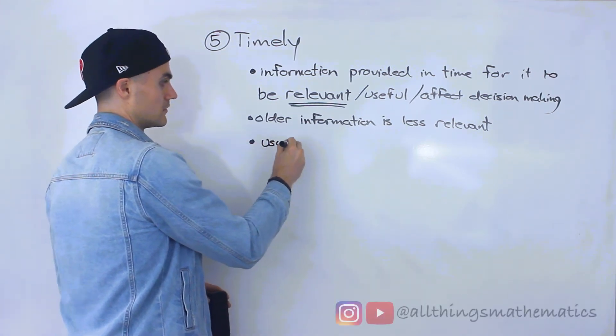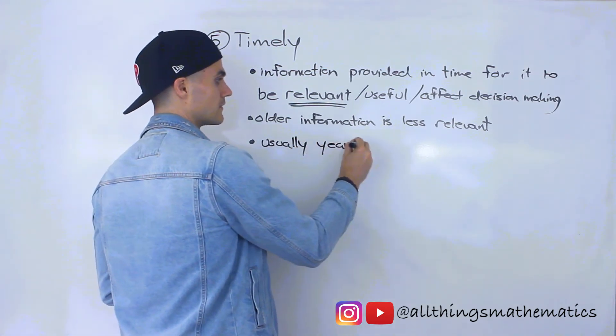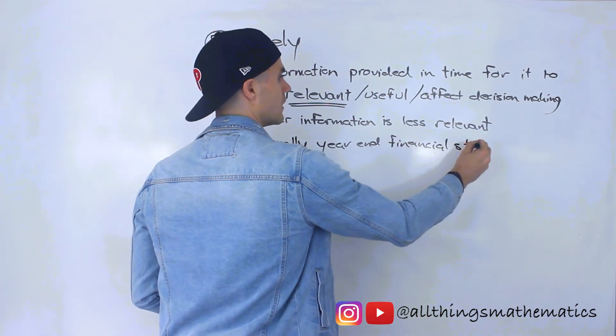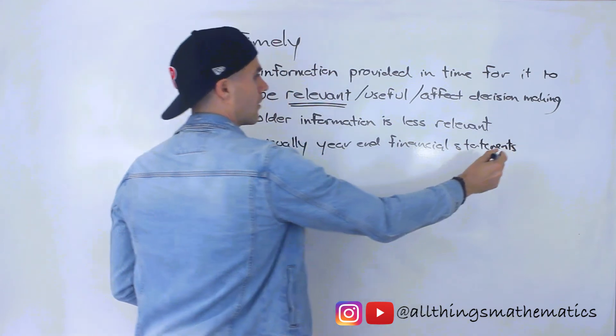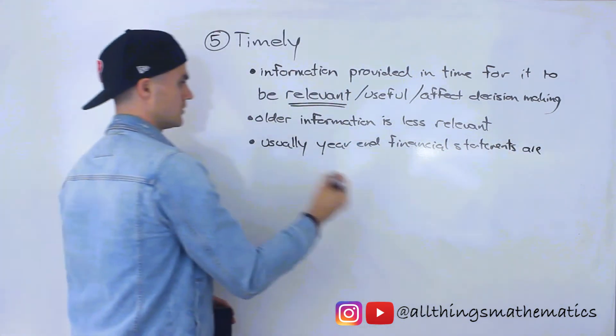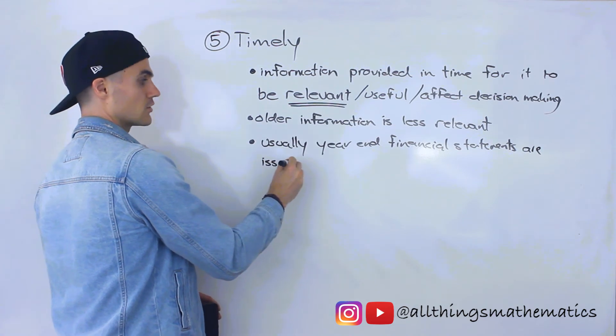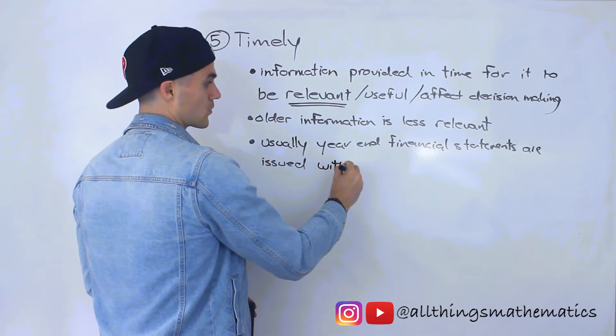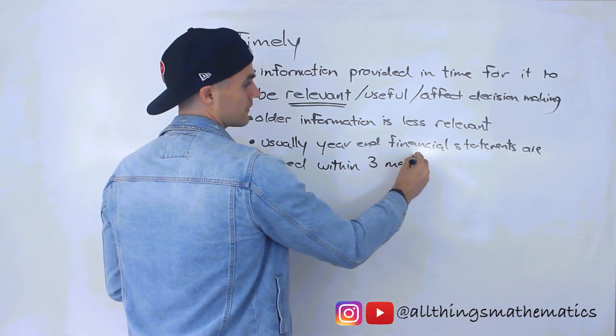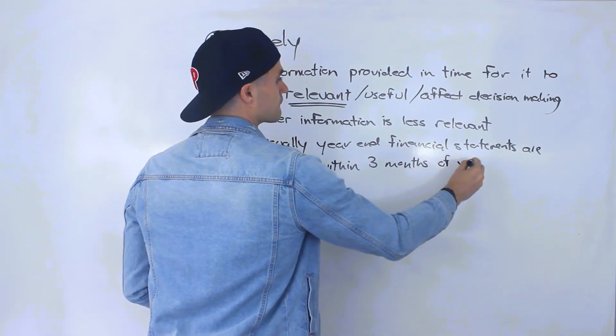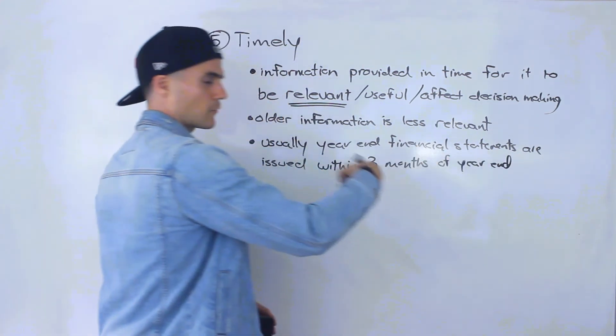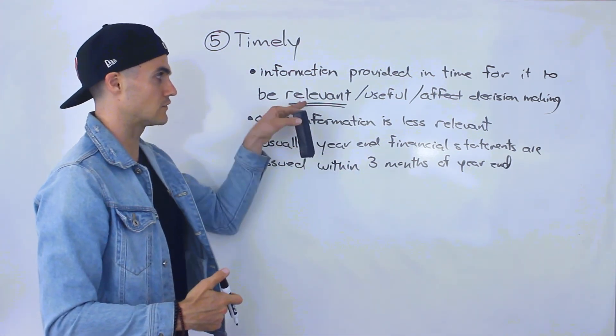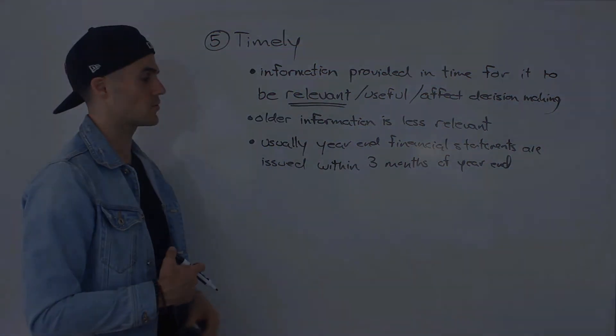And so, usually, year-end financial statements of bigger companies are issued to external users within three months of year-end. Because as more time goes by in preparing these financial statements, the less relevant, the less timely this information is going to be.